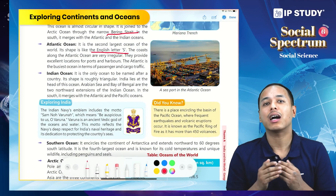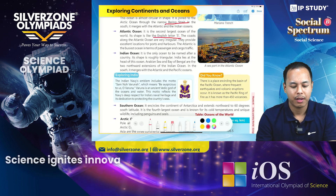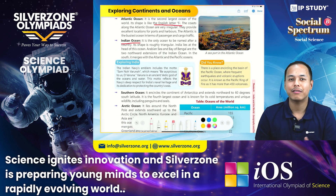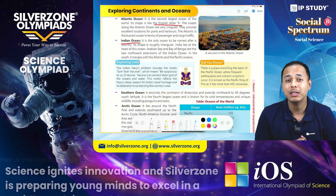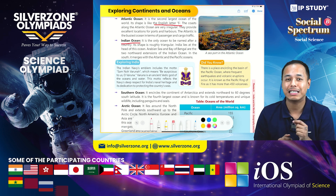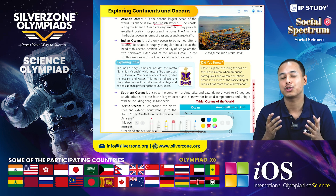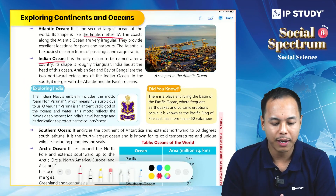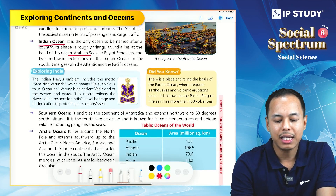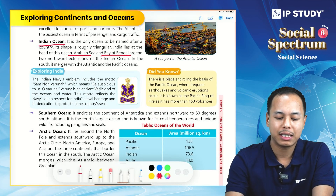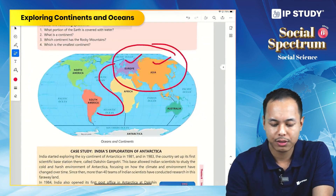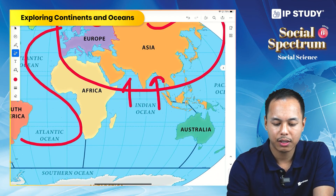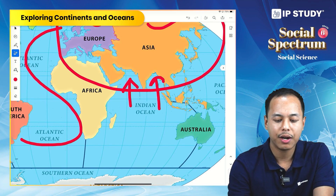The Indian Ocean is very interesting because it is the only ocean named after a country — India. The Arabian Sea and the Bay of Bengal are the northward extensions of the Indian Ocean.